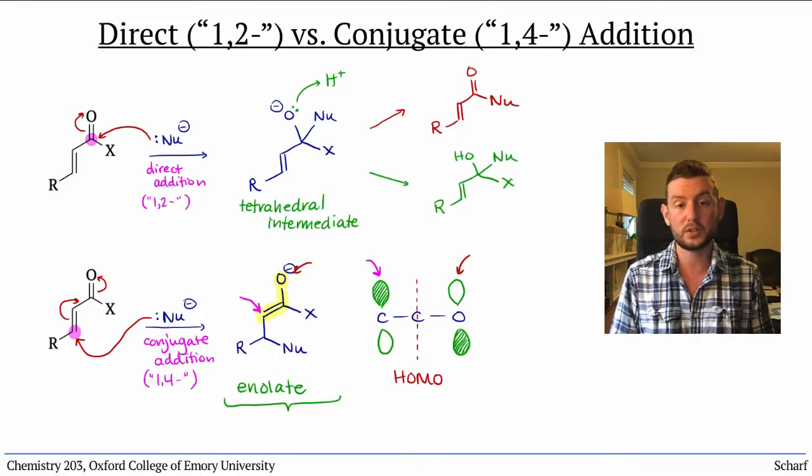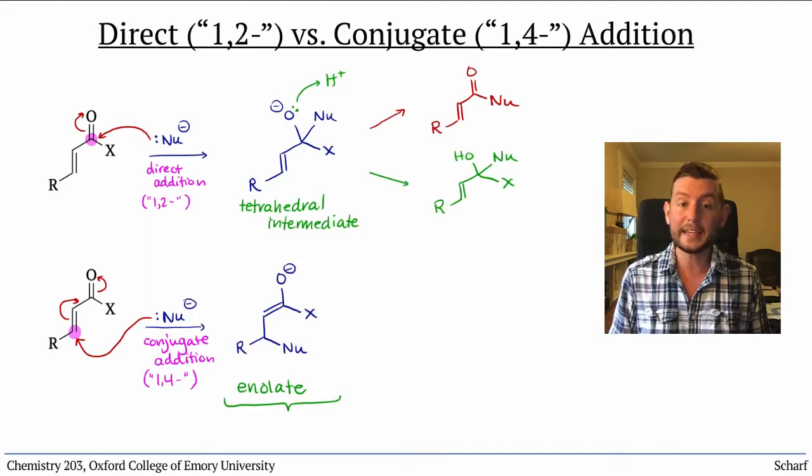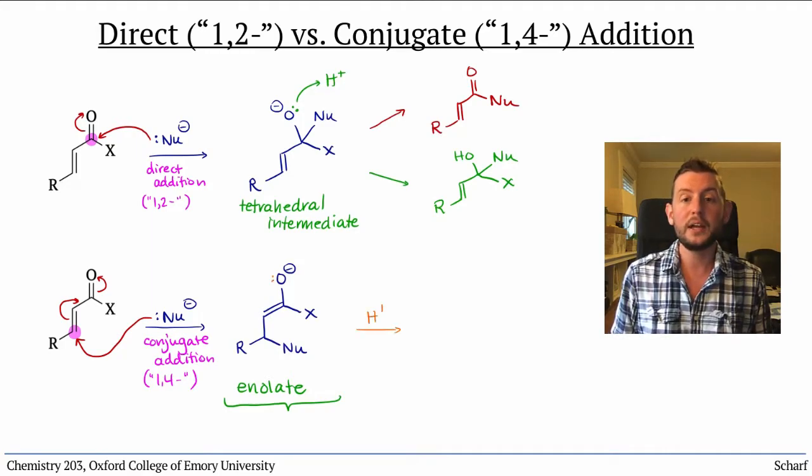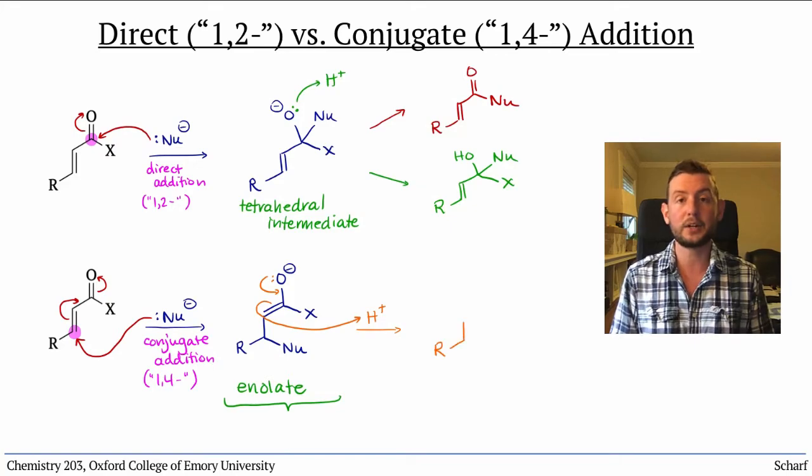This delocalized orbital illustrates that the enolate can react at either the O- or the alpha carbon, just like its two resonance structures imply. While both can happen, for reasons we'll learn about later, enolates typically react at carbon.